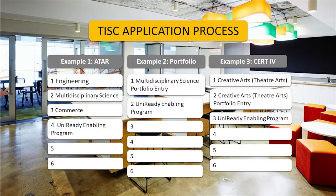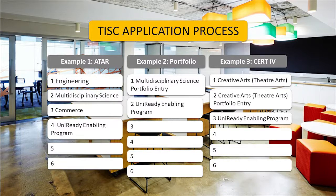For students submitting a portfolio, you might put the portfolio entry course as your first preference and the UniReady course as a second preference to fall back on. For Certificate IV students, you might put your desired Bachelor degree as first preference, the creative arts portfolio preference as second, then enabling again. The key thing is to always ensure you have an enabling program at the bottom so you can always fall back on that — if you don't include it, we won't send you an offer for it because we won't know you're interested.